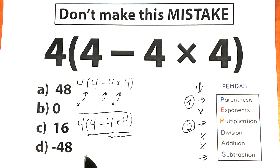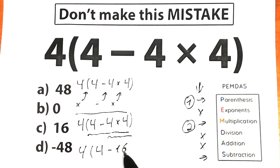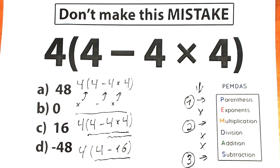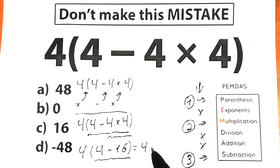We multiply 4 times 4. So what do we have? We have 4, and inside parenthesis we have 4 minus 16. We multiply 4 times 4 which is equal to 16. Our third step is subtraction — we should subtract 4 minus 16, which is equal to 4 times, and inside parenthesis we have minus 12.